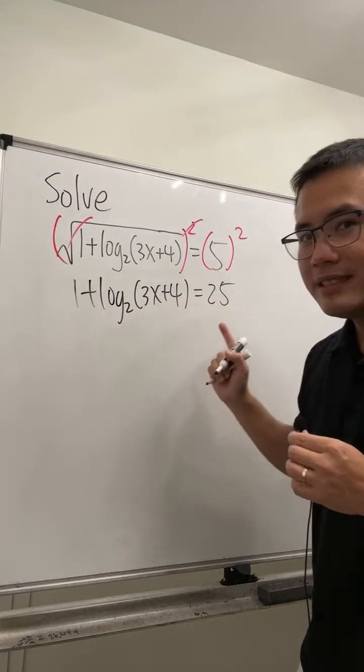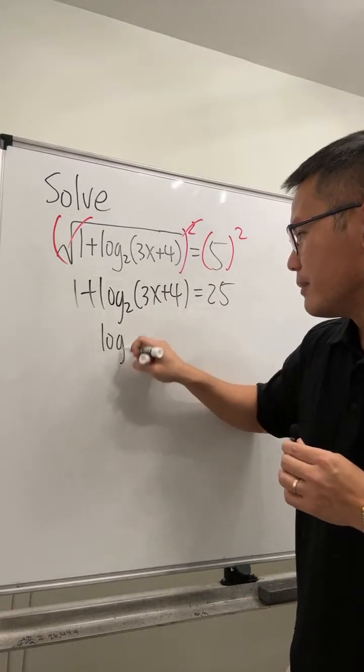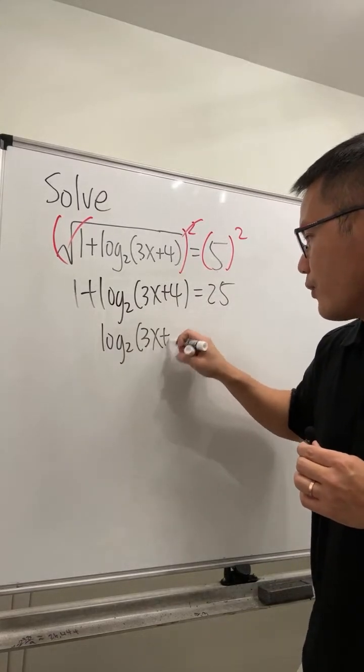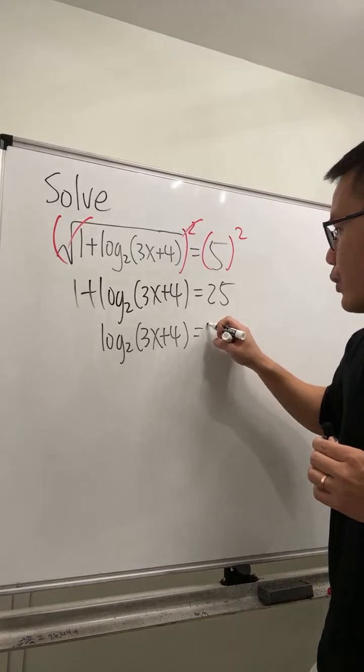Then minus 1 on both sides, so we have log base 2 of 3x plus 4 equals 24.